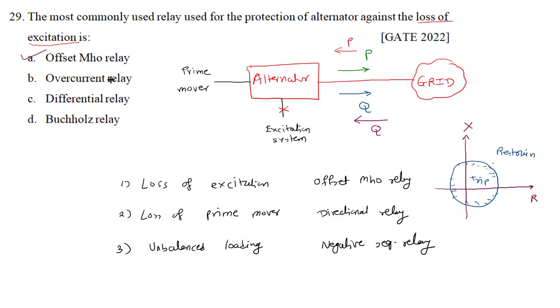Overcurrent relay is used as backup protection. Differential relay provides primary protection for the alternator. Buchholz relay is used for protection of transformers against incipient faults.